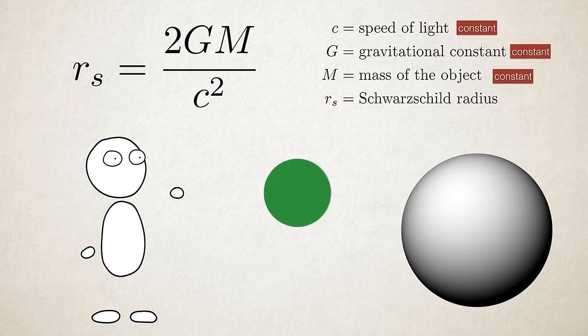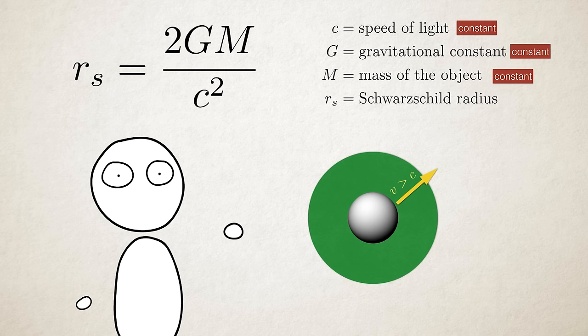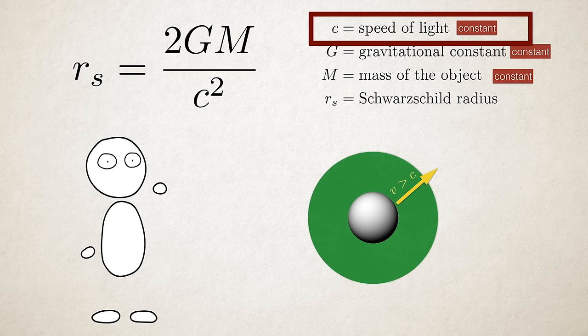It is the radius of a sphere such that if all the mass of an object were to be compressed within that sphere, the escape velocity from the surface of the sphere would equal the speed of light. This means that in order to escape the gravitational pull of the object, whatever tries to get away from it would have to move faster than the speed of light. But because the speed of light is constant and nothing can ever go faster, nothing can escape.